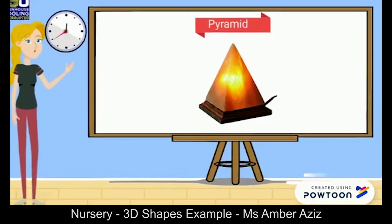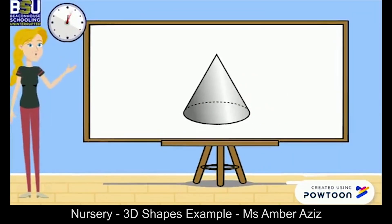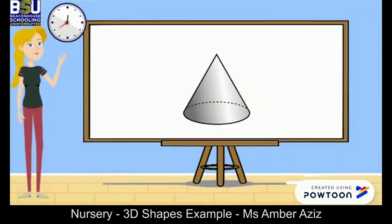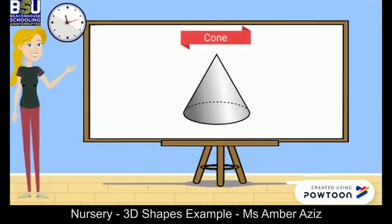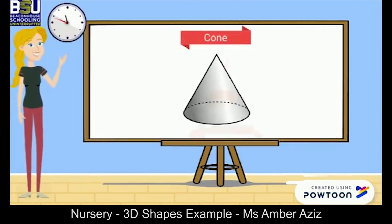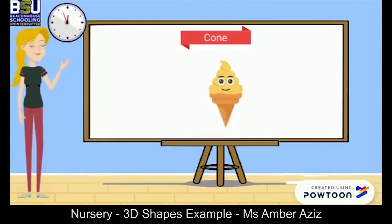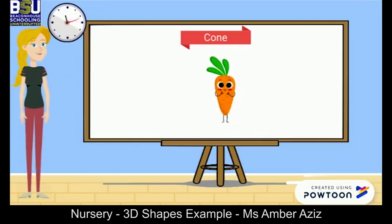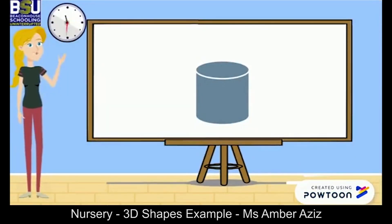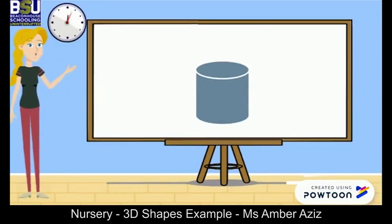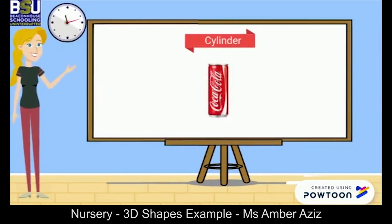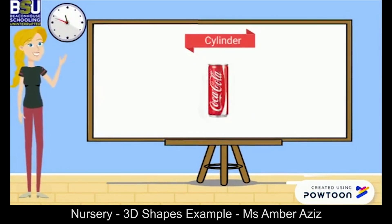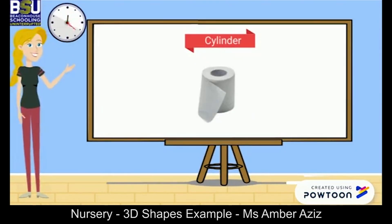Which shape is this? Yes, it's a cone! A traffic cone, ice cream cone, and party cap are examples of a cone. This is a cylinder — look at the examples of cylinder shapes around us.